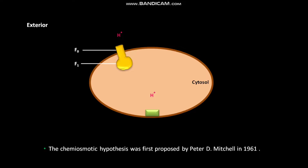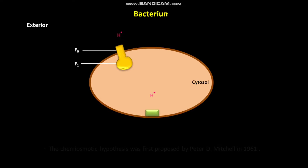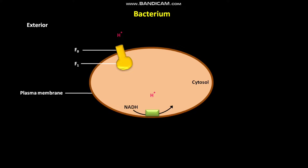Let us discuss chemiosmosis in a primitive aerobic bacterium. The plasma membrane of a primitive aerobic bacterium has enzymes that oxidize NADH to NAD+. These enzymes also transfer electrons to the electron acceptor O2. After accepting electrons,